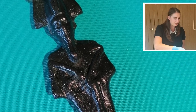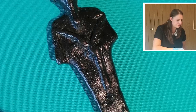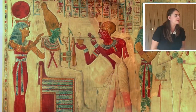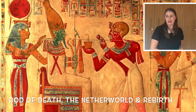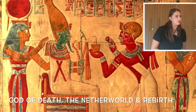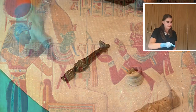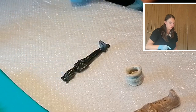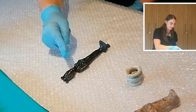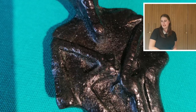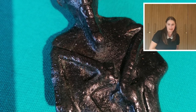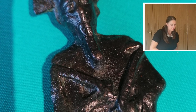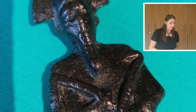So here we have a statue of Osiris. It's made out of copper alloy. Osiris was the Egyptian god of death, the underworld, and rebirth. He's depicted wearing his distinctive crown, which you can see at the top here. He's also holding the crook and the flail, as you can see in his hands just here. This was a later symbol of pharaonic rule and also represented the fertility of the kings.